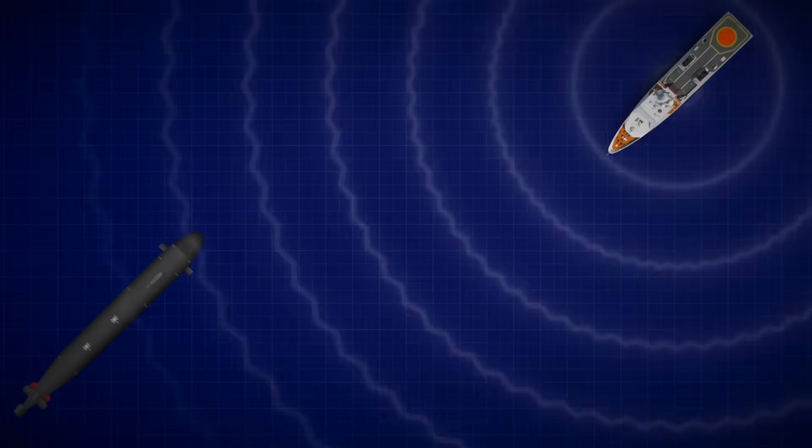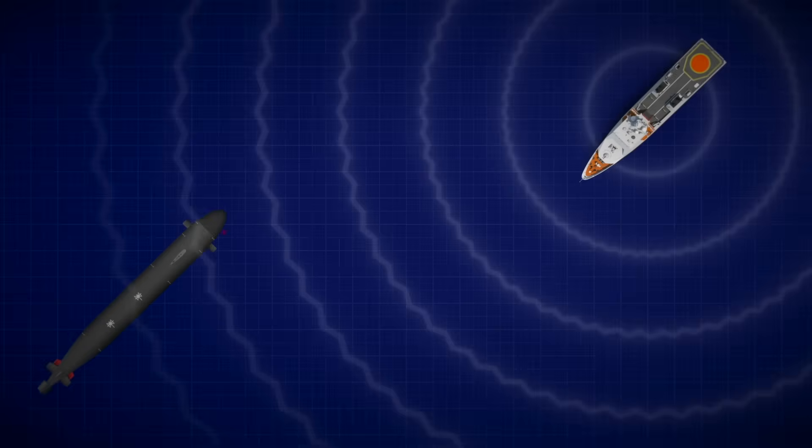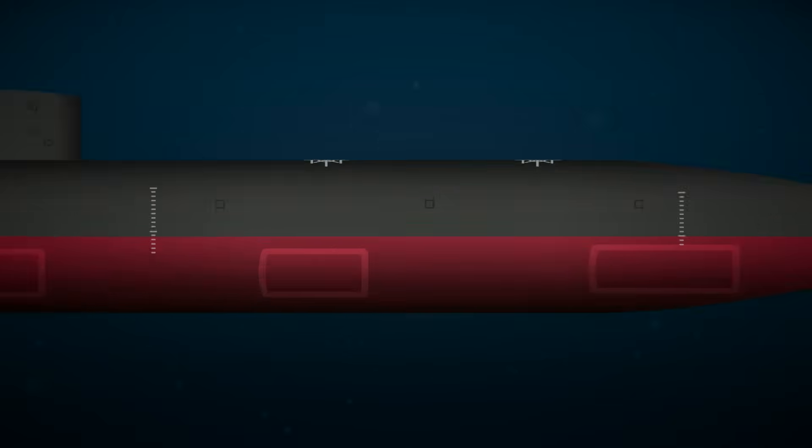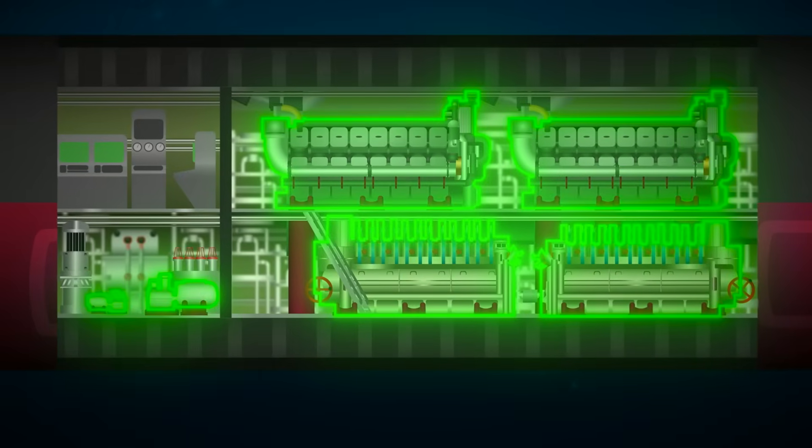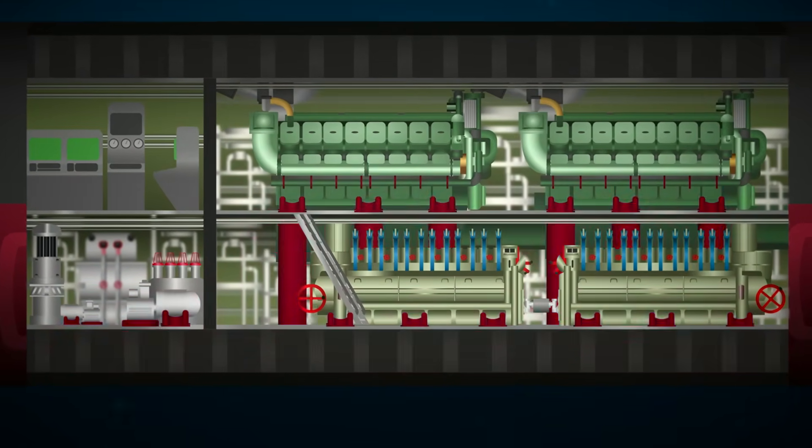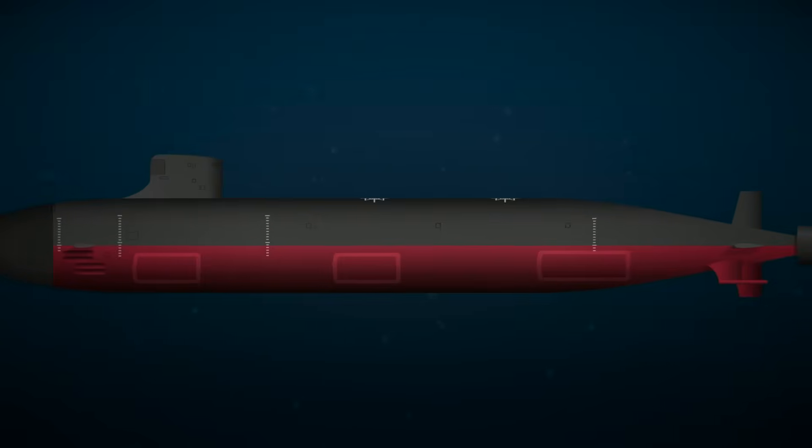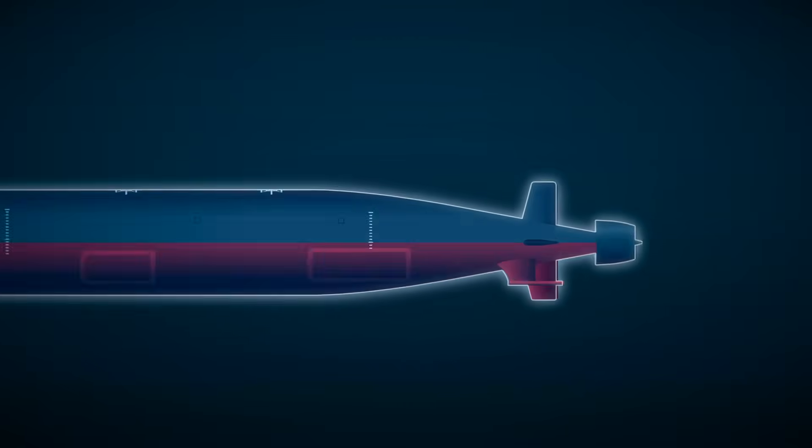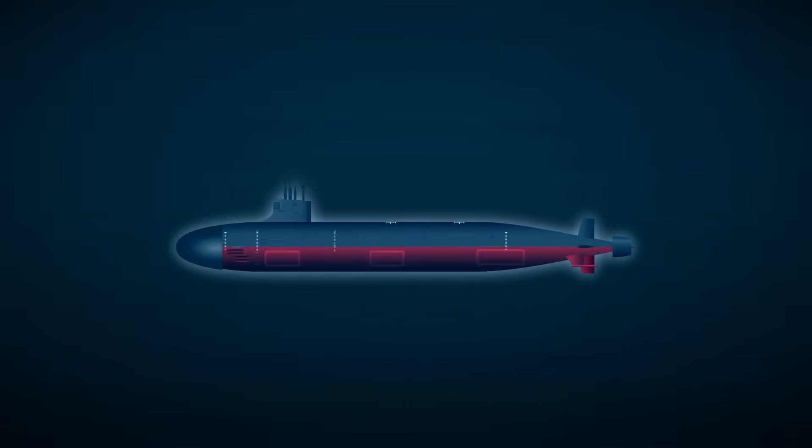If you can hear the other vessels before they hear you, you're in control. That's why submarines are designed for silence. Everything on board is isolated. Engines are mounted on rubber, machinery is suspended, and even footsteps are muffled. Rotating parts are balanced to get rid of vibrations.